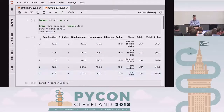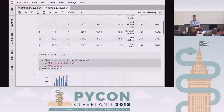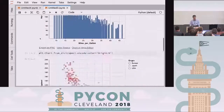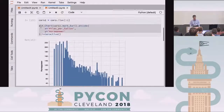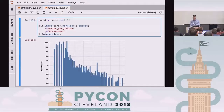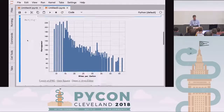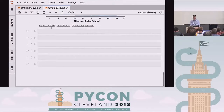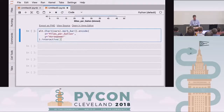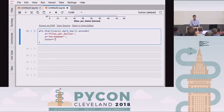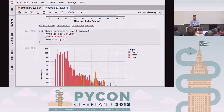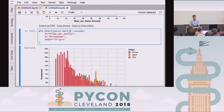In this live demo, where did my scatterplot go? I totally lost my scatterplot. That's all right, we'll recreate it — it's only a few lines of code. So we want Y is horsepower, and we want color equals origin. And I don't want mark bar, I want mark point.